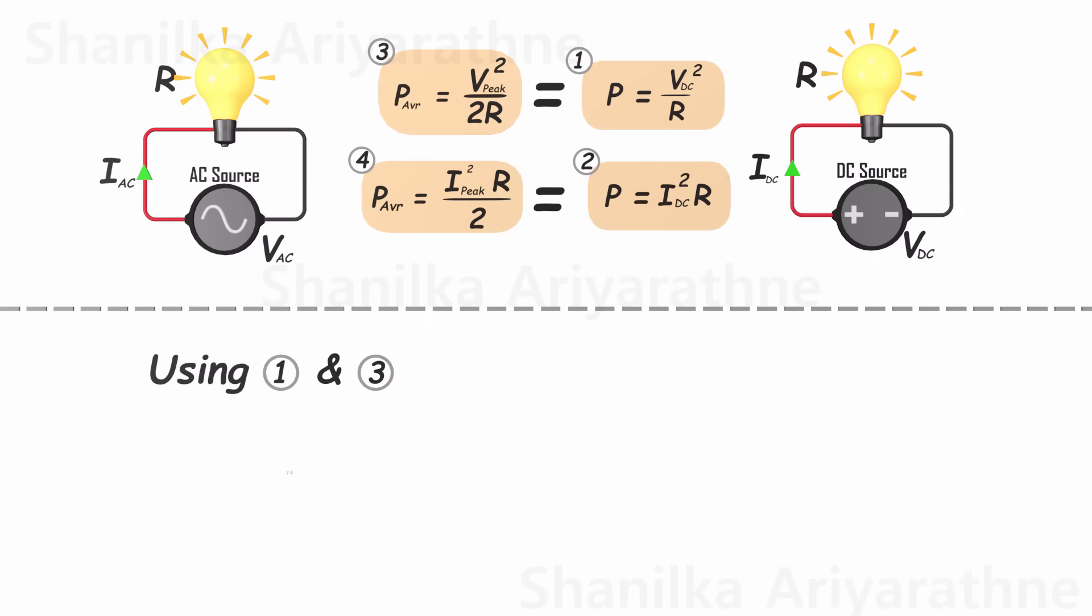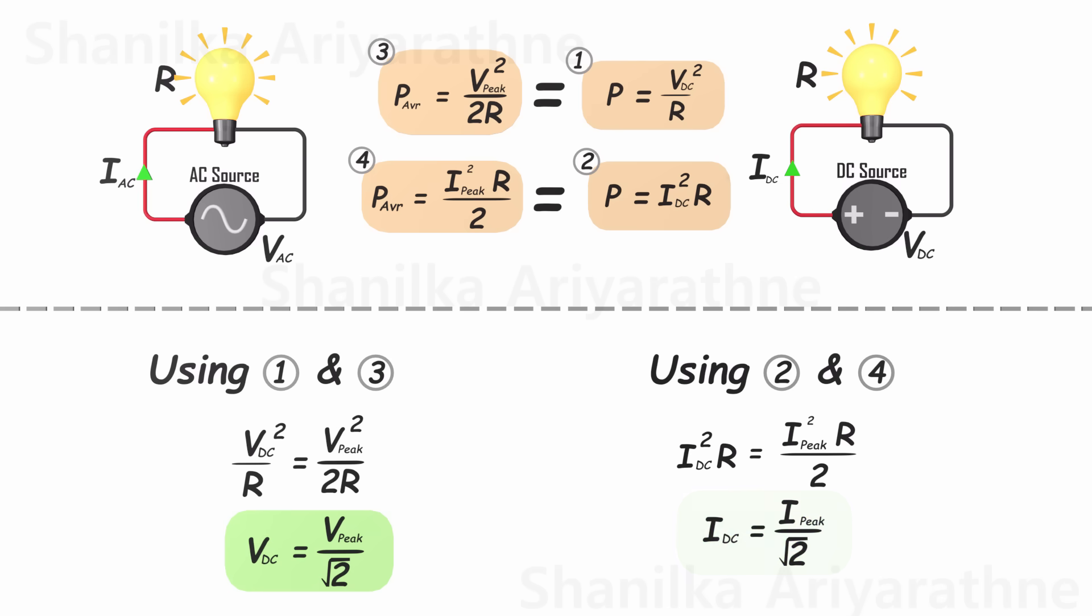By utilizing equations 1 and 3, we can determine the DC circuit's equivalent voltage value for the AC circuit. Similarly, by using equations 2 and 4, we can ascertain the DC circuit's equivalent current value for the AC circuit.